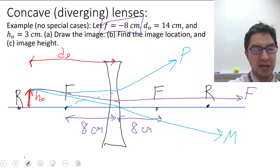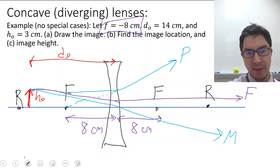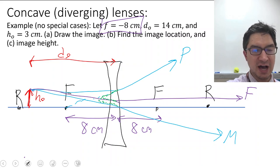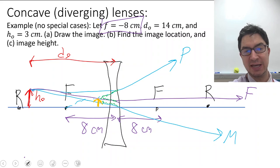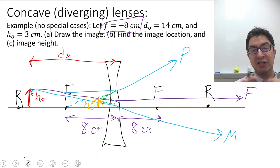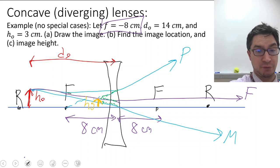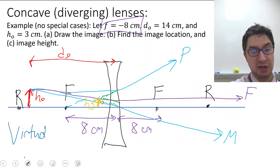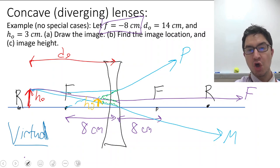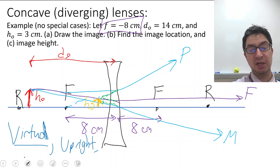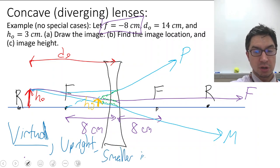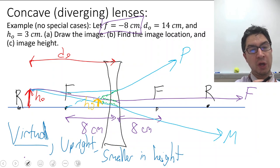Tracing the P ray, F ray, and M ray back, they all appear to originate from one location in front of the lens — this is the virtual image H sub I. Because the light rays don't actually converge, this is a virtual image. It should be upright and smaller in height, which is consistent with what we expect from a diverging lens.